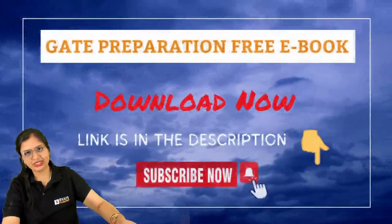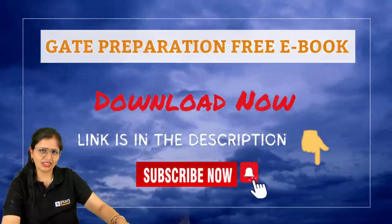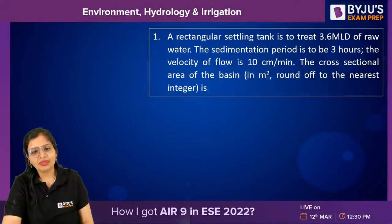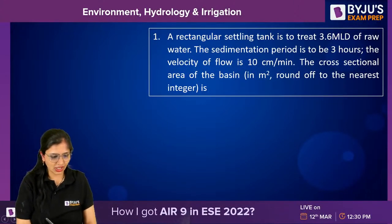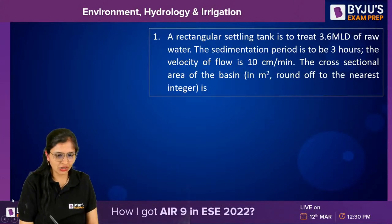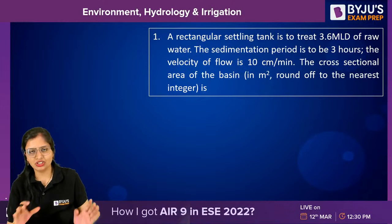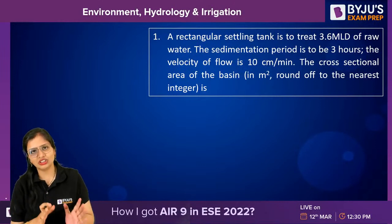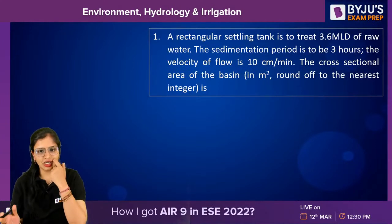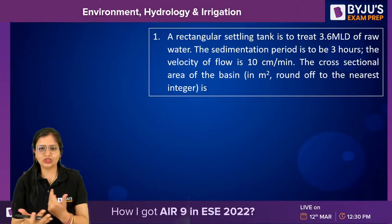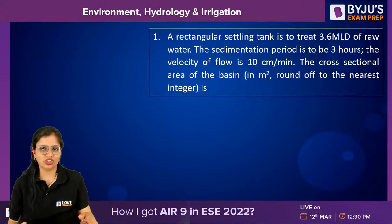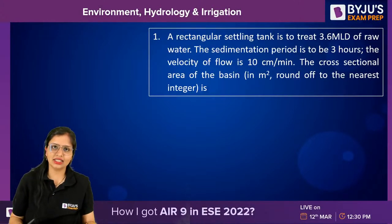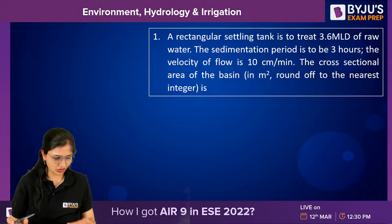We'll take a target of 45 minutes to complete. This is the first question regarding environmental engineering, then hydrology, and then irrigation — 20 questions in a mixture. These questions will help you in your revision and are according to your GATE-level questions.